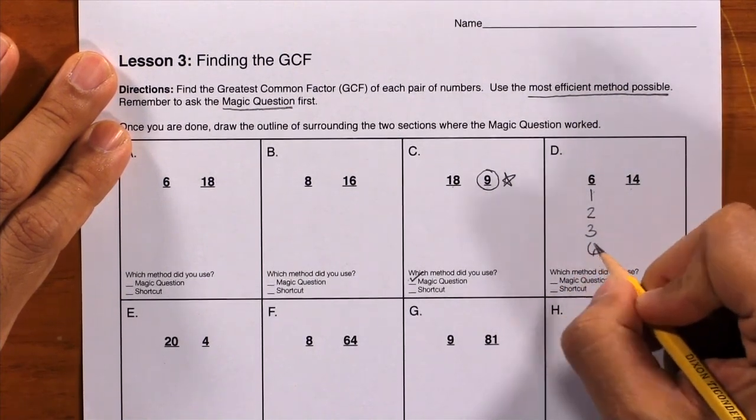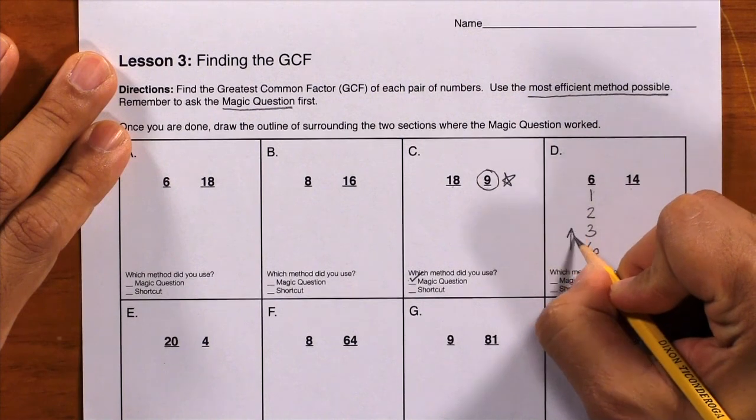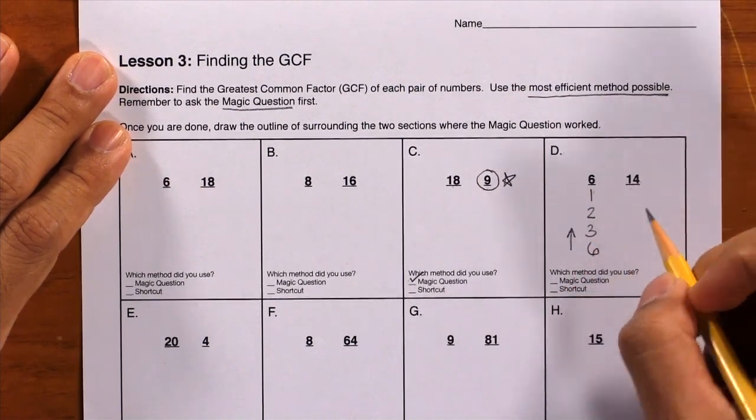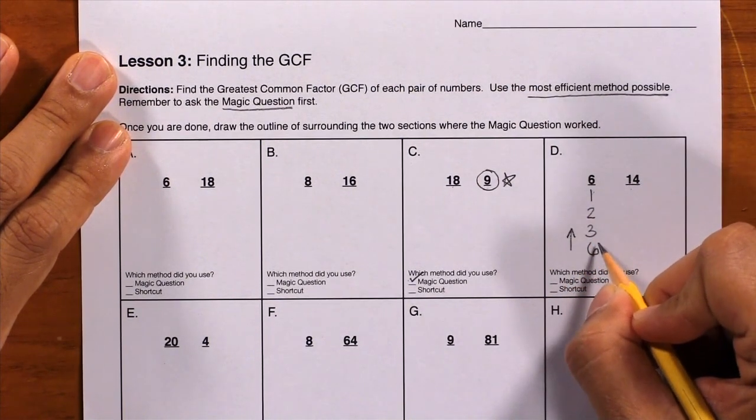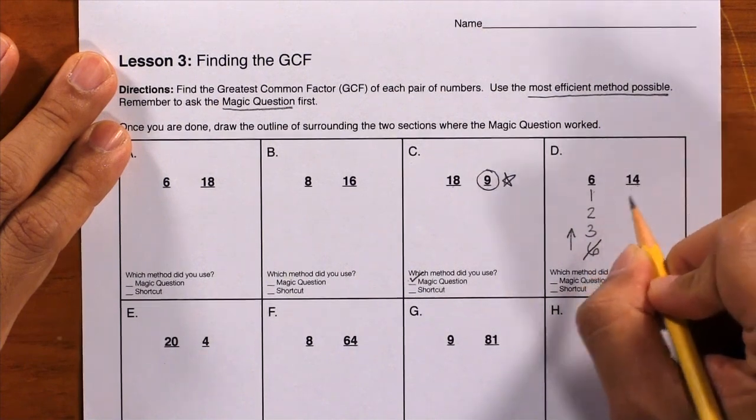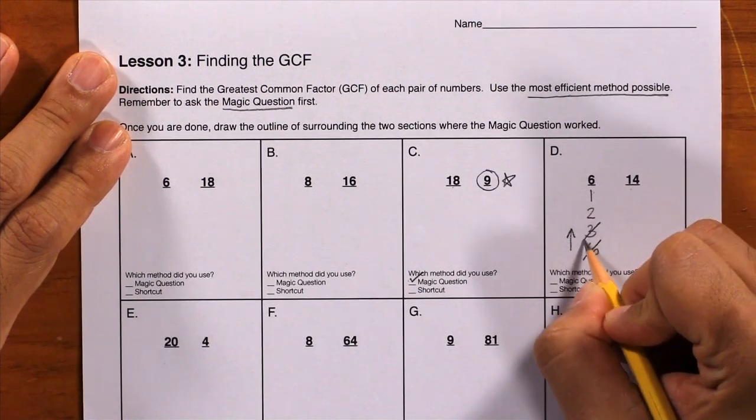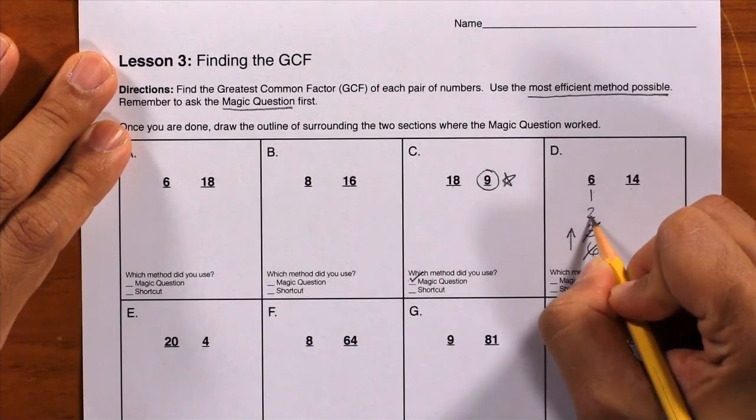Just like in real life, start at the bottom and work your way up. Can you do 14 divided by 6 evenly? No, cross it off. 14 divided by 3? No. 14 divided by 2? Yes.